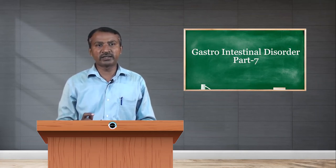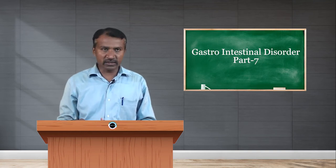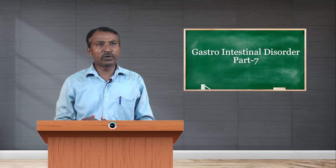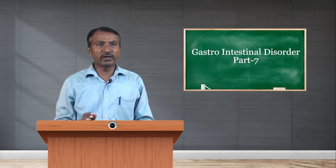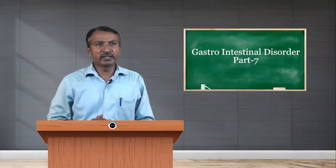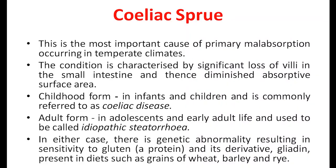Radiation therapy used for treating cancerous conditions is also a cause. Subtotal or total villus atrophy is the severe form of lesion in which there is flattening of the mucosa due to more advanced villus fusion. Another important condition is celiac sprue, the most important cause of primary malabsorption occurring in temperate climates.